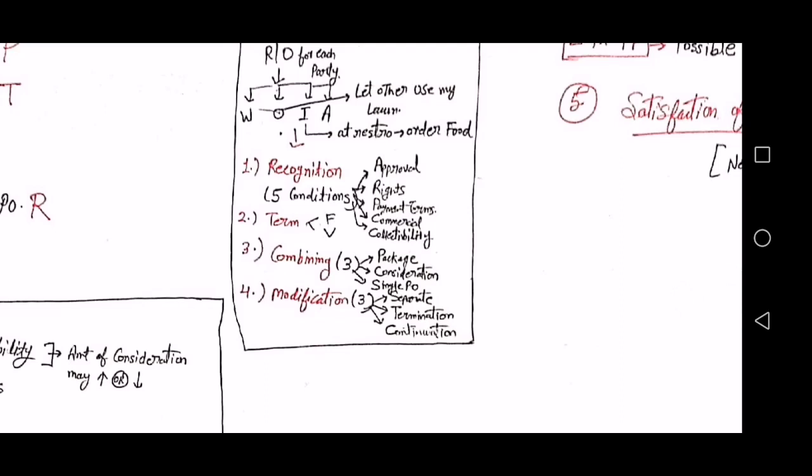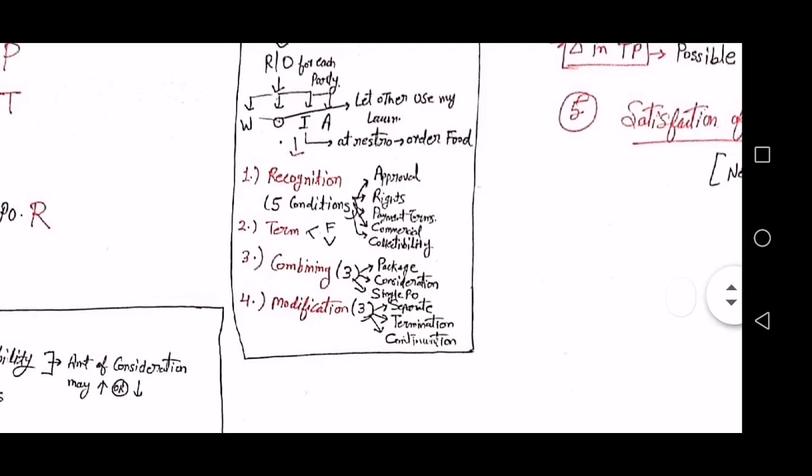There are five conditions to determine whether a contract exists: approval of rights by both parties, both parties should be aware of their rights and liabilities and payment terms, there must be commercial substance — barter cannot qualify — and there must be collectability assurance. If any consideration is not collectible, it cannot be considered a contract; it may be treated as a donation.